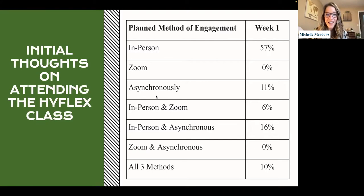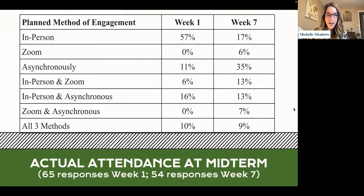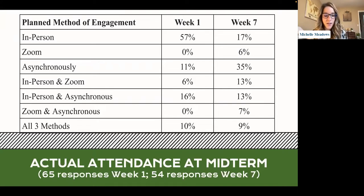Midway through the semester, we tracked how students were actually attending, and the percentage attending in person greatly went down — only 17% attended in person. Zoom increased slightly, but a large percentage were deciding to engage asynchronously on their own. The number of survey responses also went down because many students were not in class and were not prompted to complete the survey. We sent it out multiple times through announcements and email, but the surveys were not graded, so there was no consequence for not completing them.